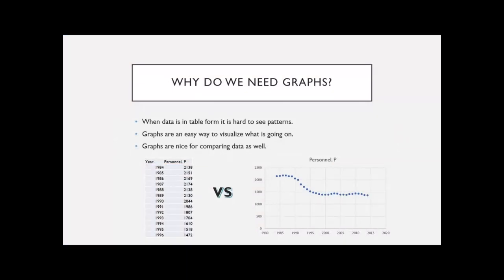So why do we need graphs? The biggest reason is because it's really hard to see patterns if you're just given a table of numbers. You can see with this data that the table is only showing a portion — you can tell numbers are decreasing, but you don't actually see that it's stabilizing and flattening out after a sharp decrease. A graph gives you a much better way to see what's going on, and it's also much easier to compare data in a visual format.